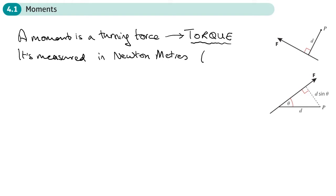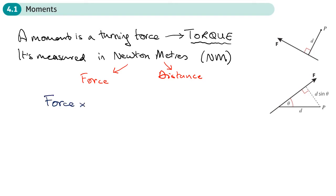The unit is Nm, which makes sense because a Newton is a measure of force and a meter is a distance. The way we work out a moment is: force times distance. But it's not just any distance — this distance must be the perpendicular distance to the force.